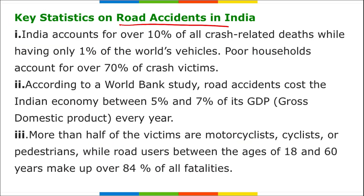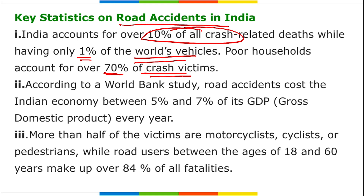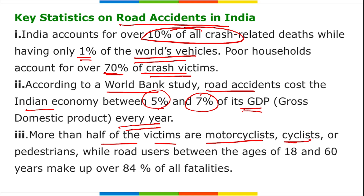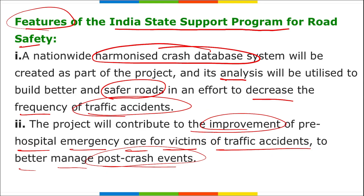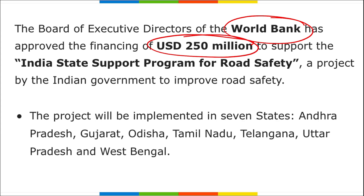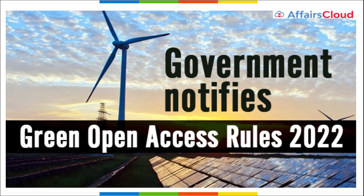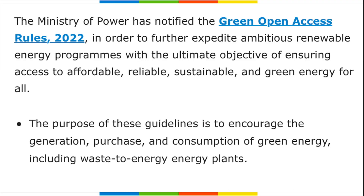India accounts for over 10% of all crash-related deaths while having only 1% of the world's vehicles. Poor households account for over 70% of crash victims. Road accidents cost the Indian economy between 5% and 7% of its GDP every year. More than half of victims are motorcyclists, cyclists, or pedestrians, and road users between 18 and 60 years make up over 84% of all fatalities.